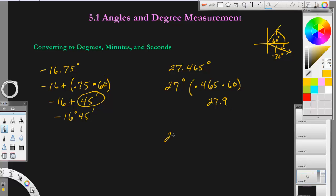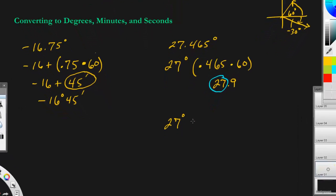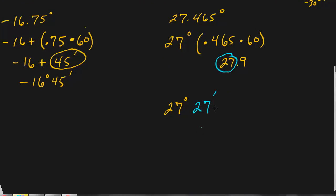So far, this answer is going to be 27 degrees. This right here is going to be the number of minutes, so that's 27 minutes. Then we're going to take this 0.9 and multiply it by the number of seconds in a minute, so multiply it by 60. When you do that, you will get 54. So if you have a decimal left over when you do this, you multiply it by 60 again, not 0.60. That's times 60, and you will get 54 seconds.